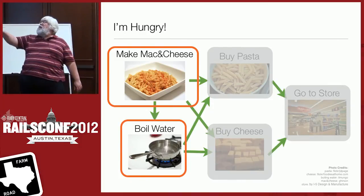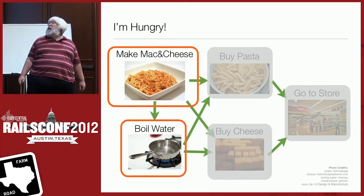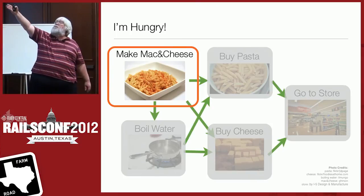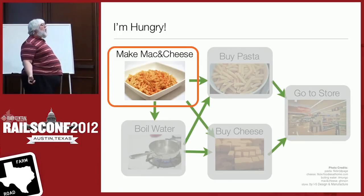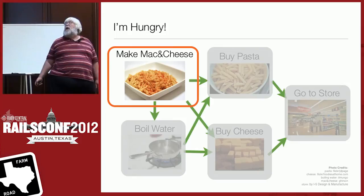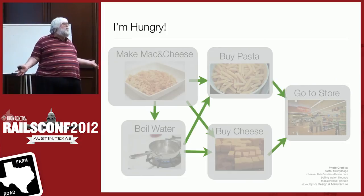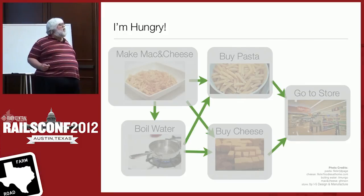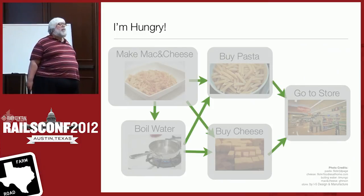So we click off buy cheese, boiling water is done, both dependencies satisfied. Back at make mac and cheese, buy cheese and buy pasta have already been done, so the body for make mac and cheese runs. Rake's engine is about 50-100 lines of code — it just walks the tree of dependencies, executes prerequisites, and walks back up in a depth-first manner. It's actually pretty simple.